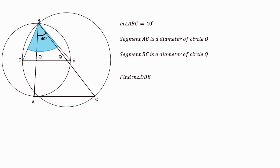Hello everyone and welcome to Pentagon. Today's problem is another geometry problem and this time we're greeted with a rather complex diagram. We're given that the measure of angle ABC is 40 degrees, AB is a diameter of circle O, and BC is a diameter of circle Q. We need to find the measure of angle DBE. Please pause the video here if you'd like to try and solve this yourself.